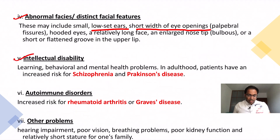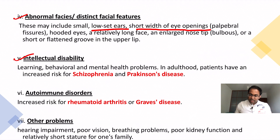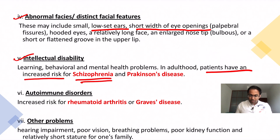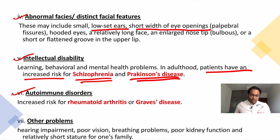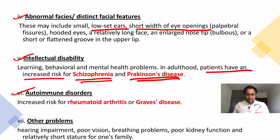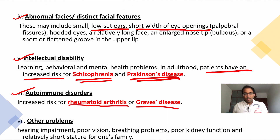Intellectual disability means the child has learning, behavioral, and mental health problems. In adulthood, patients have an increased risk for schizophrenia and Parkinson's disease. Regarding autoimmune disorders, patients in adulthood have an increased risk for rheumatoid arthritis and Graves' disease. Other problems can include hearing impairment, poor vision, and breathing problems.